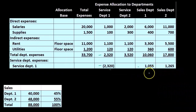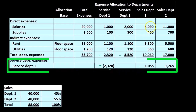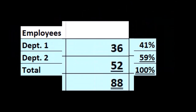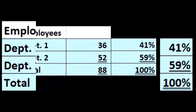We're going to do the same thing for the second service department. This is still here: 3,520. We need to apply it out to the operating departments. We're going to do that with a different activity base, because as the management, we think that employees is a better activity base to apply out this service department. That's going to be a managerial decision to make.